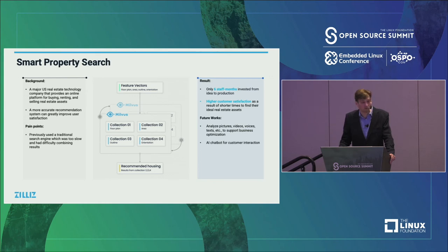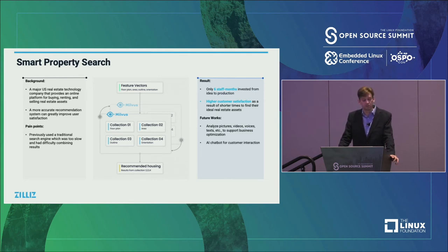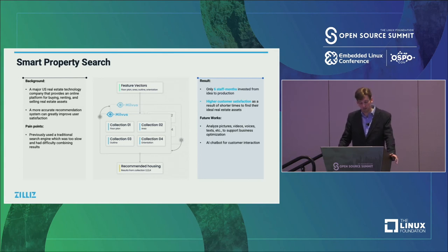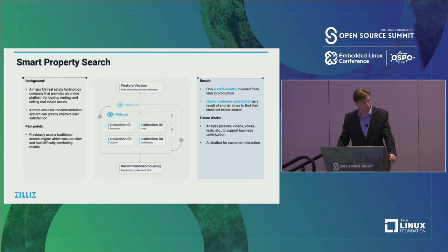For future work, since they're already dealing with unstructured data, they could incorporate pictures, videos, voices, and text. One idea: if someone wants a house with an ocean view, you could take a photo of the view, embed it into a vector, and find similar results. Or you could use surrounding sound recordings to find houses with similar noise environments. They are also working on an AI chatbot as another use case of Milvus and vector similarity search.